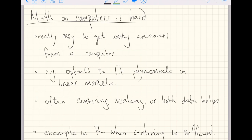We're going to do an example where we try to use Optum to fit polynomials, which are inherently dangerous, in a linear models framework. The general solution the world of statistics, machine learning, or data science has is: first, try to reformat whatever function you're trying to minimize that you're passing into Optum. Generally, the quickest solutions to getting Optum to work is centering, scaling, or applying both centering and scaling to your data. This is often a helpful strategy.